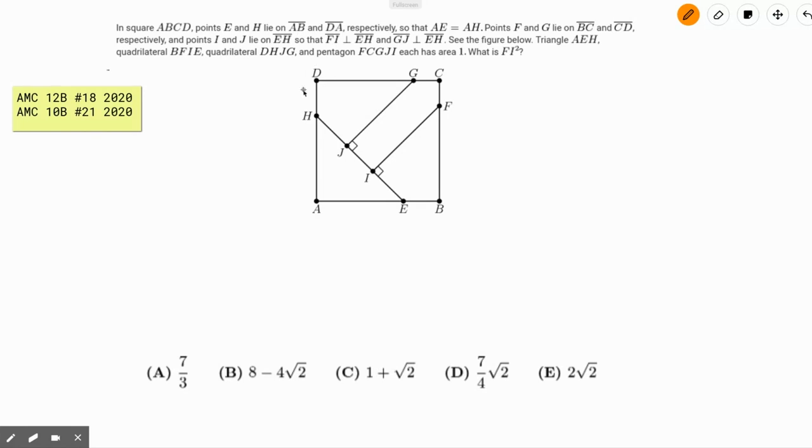It reads, in square ABCD, we have an isosceles right triangle HAE of area 1. We also have this pentagon of area 1 and two quadrilaterals of area 1, all inscribed in the square. Based on this information, we want to figure out what the value of FI squared is.